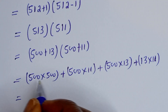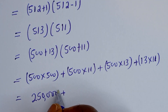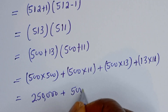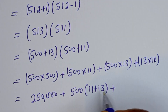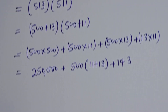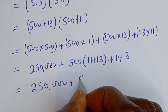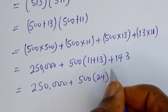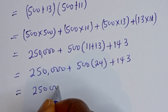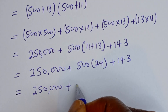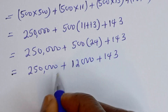Here 500 times 500 is 250,000. Plus, since 500 is common, we have 500 bracket 11 plus 13, that is 500 times 24, which is 12,000. Plus 13 times 11, which is 143.